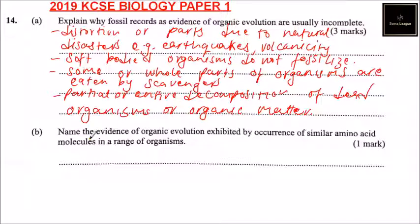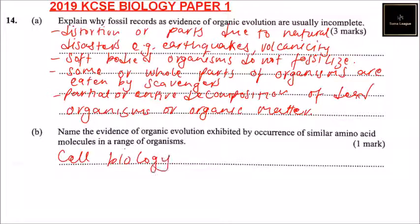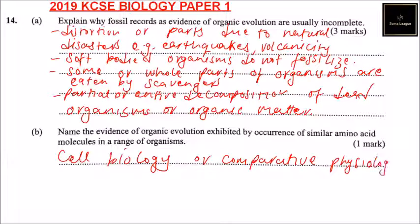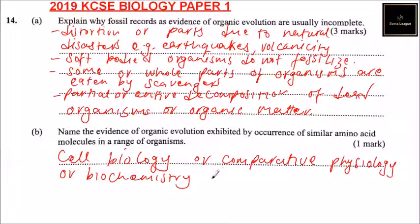Part B of this question: Name the evidence of organic evolution exhibited by occurrence of similar amino acid molecules in a range of organisms. We can say cell biology, or comparative physiology, or biochemistry. Any of these should be able to get one mark, and in total you get four marks.